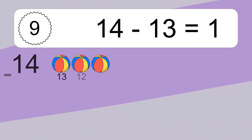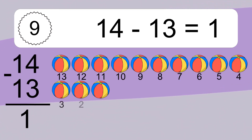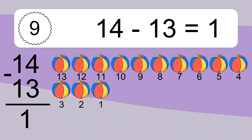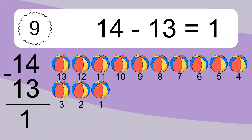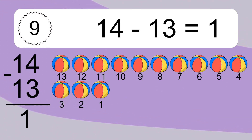14 minus 13 equals what? 14 minus 13 equals 1. Let's count it. 13, 12, 11, 10, 9, 8, 7, 6, 5, 4, 3, 2, 1.